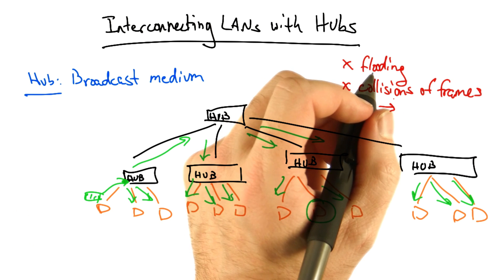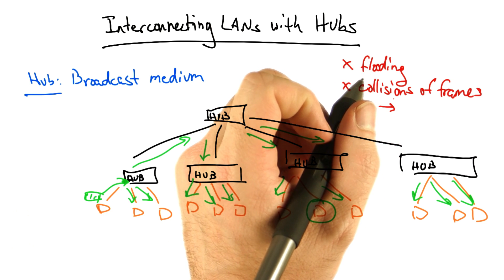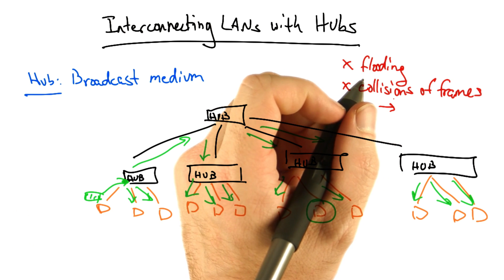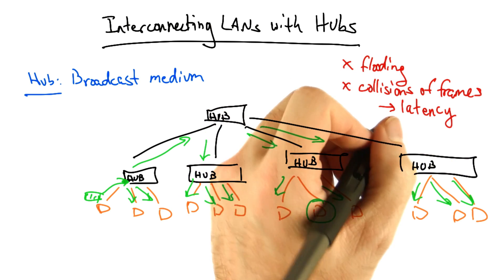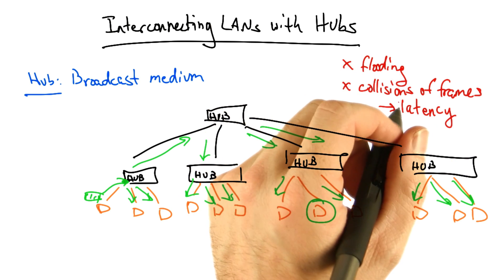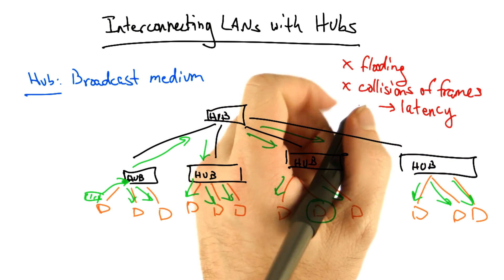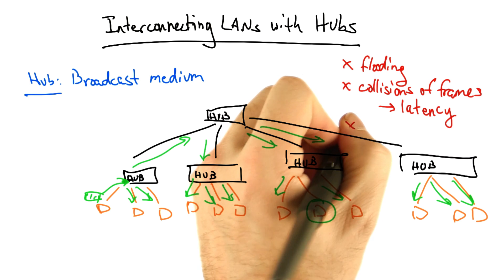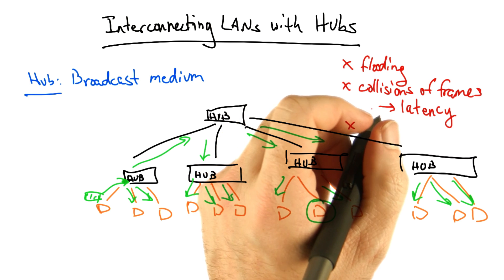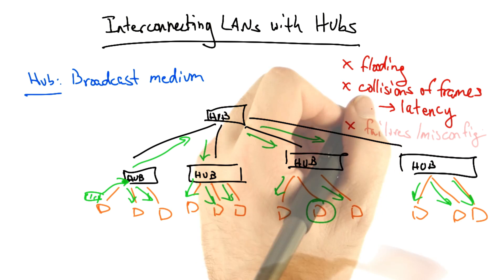The chance of collision introduces additional latency in the network, because collisions require other hosts or senders to back off and not send as soon as they see other senders trying to send at the same time.